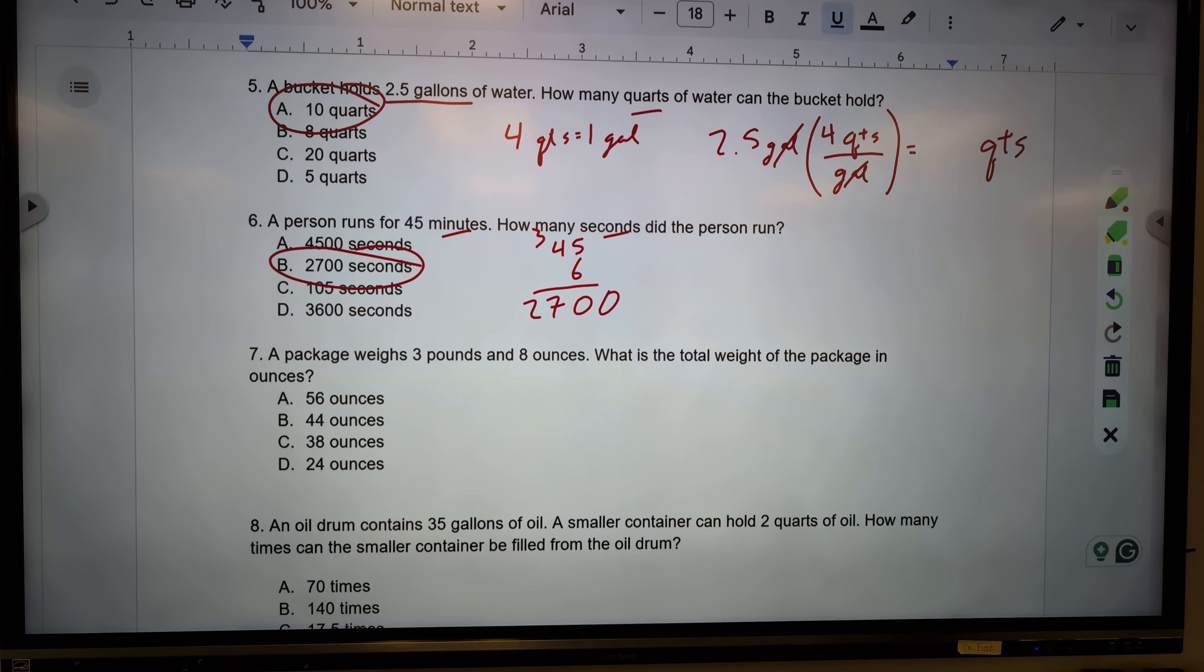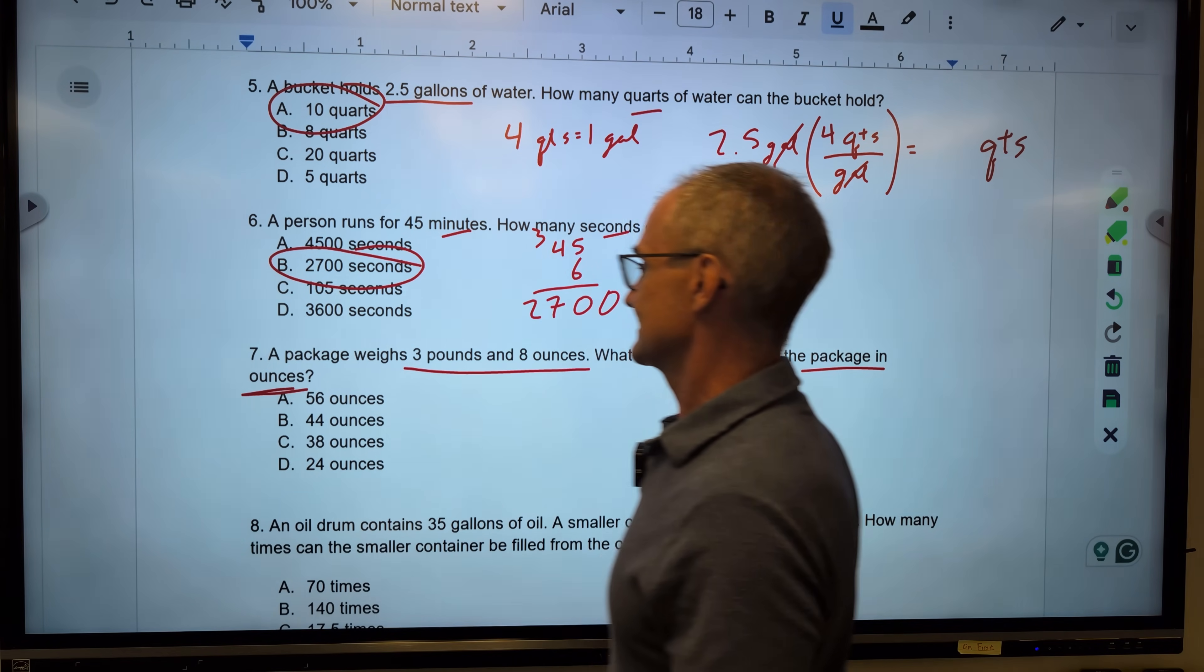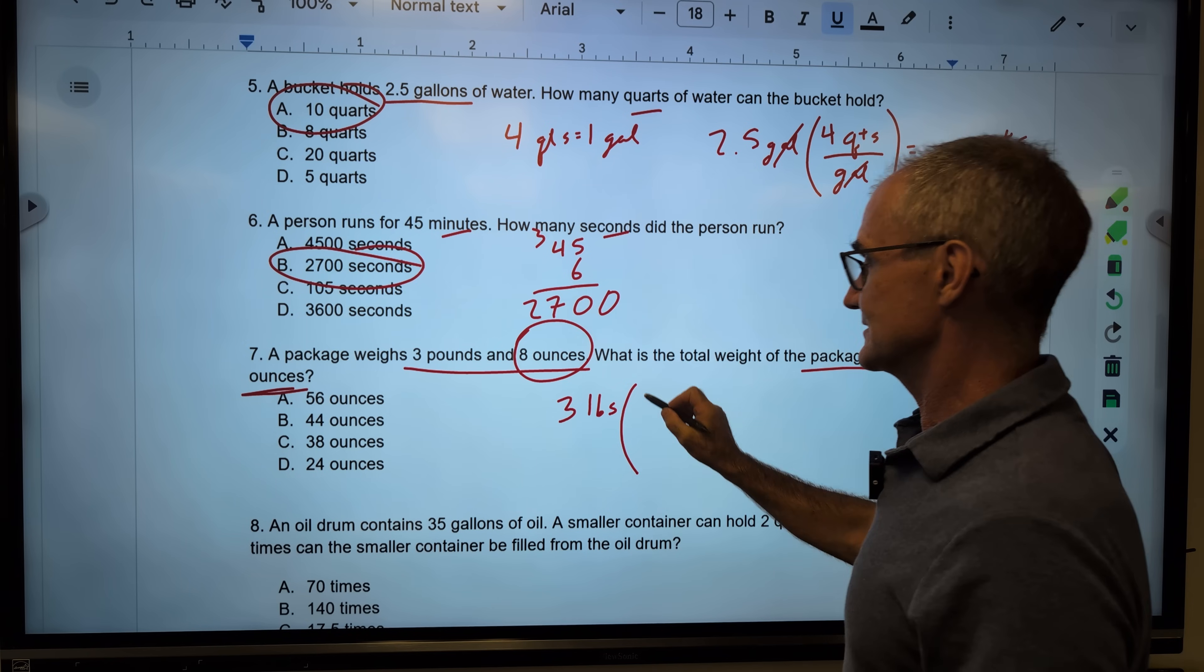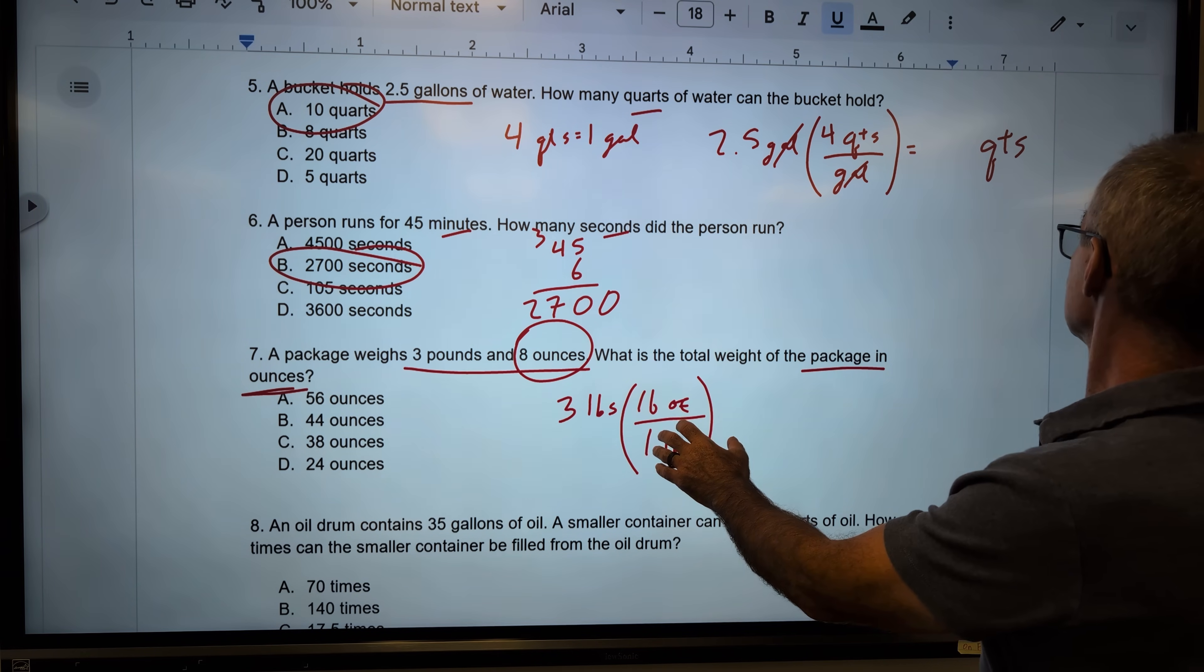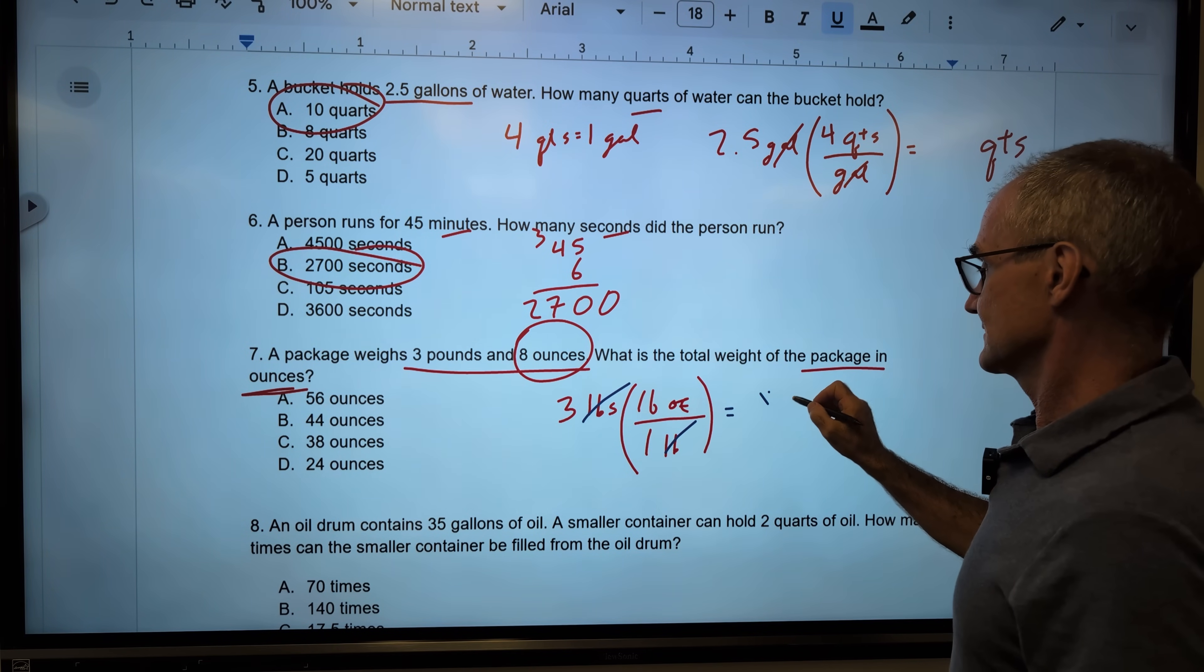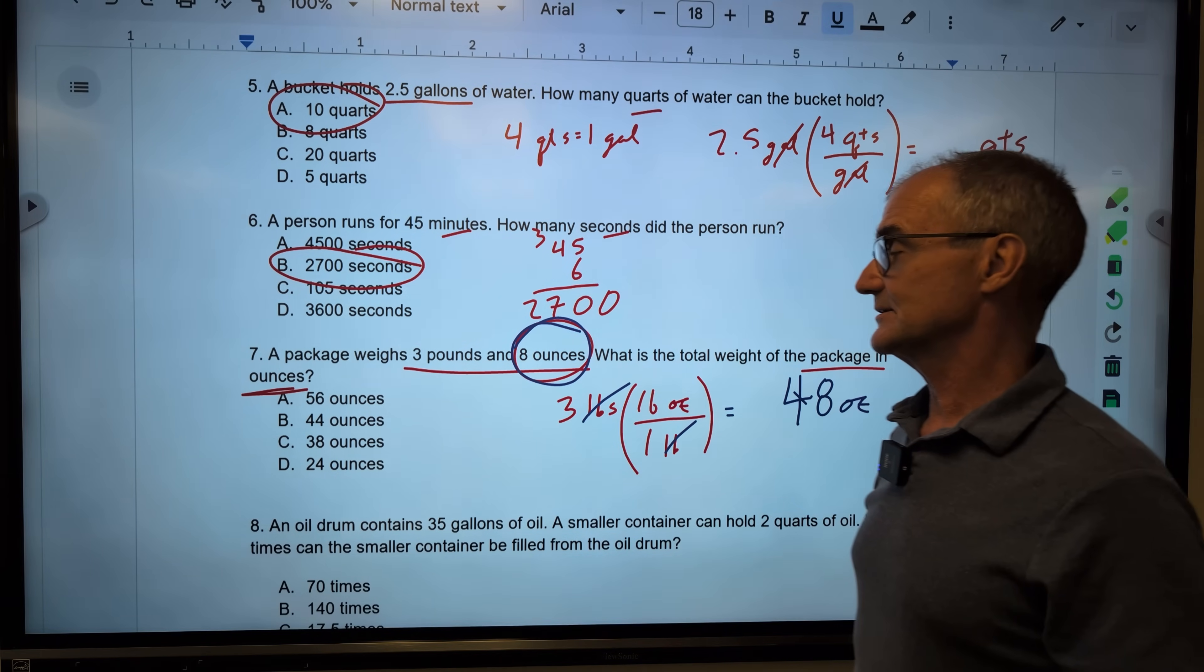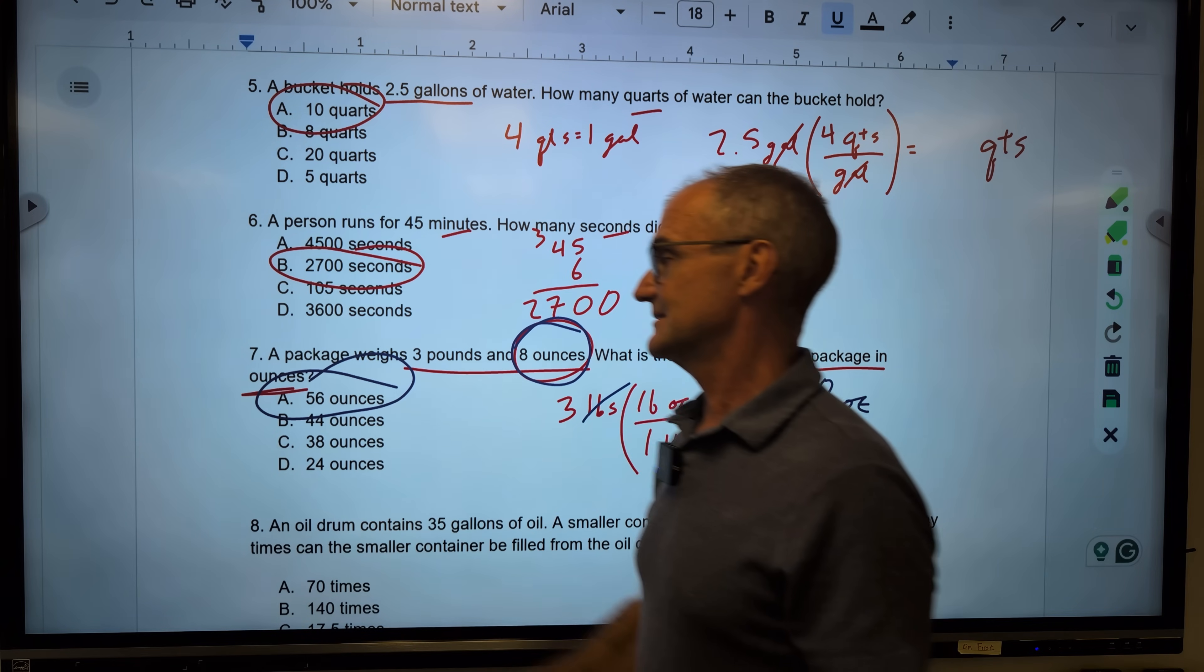Okay, number seven. A package weighs three pounds, eight ounces. What's the package weight in ounces? So we need to know that there's 16 ounces to the pound. So I'm going to hold this. I'm just going to put this on hold for a second. And I'm going to take those three pounds. And I know there are 16 ounces to the pound. Again, I do this because I'm multiplying by one. It doesn't affect the value of it. But now my pounds cancel and gives me ounces. Three times 16 is 48 ounces. So I get 48 ounces. But don't forget these eight ounces you put on hold. 48 and eight ounces gives you a total of 56 ounces. Correct answer. Answer A right there.